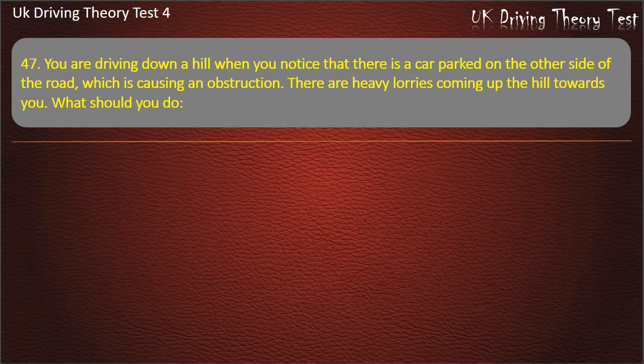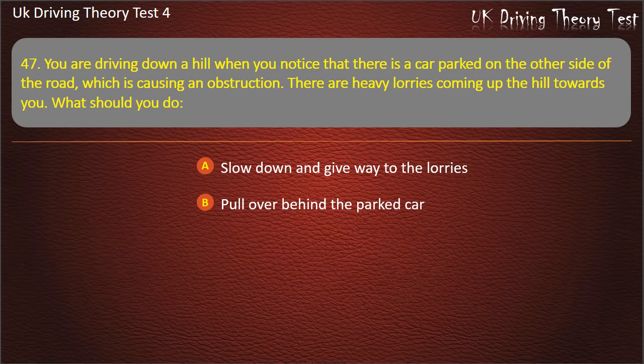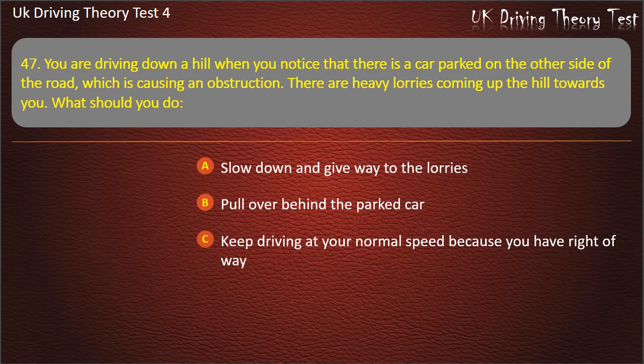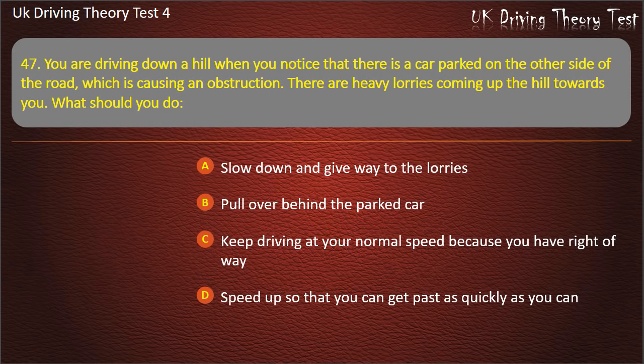Question 47. You are driving down a hill when you notice a car parked on the other side of the road causing an obstruction, and heavy lorries are coming up the hill towards you. What should you do? Slow down and give way to the lorries; pull over behind the parked car; keep driving at normal speed because you have right of way; or speed up to get past quickly. Answer: Slow down and give way to the lorries.